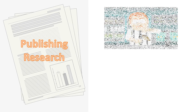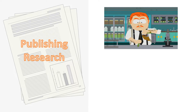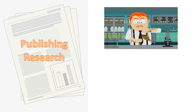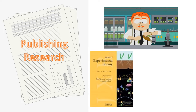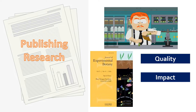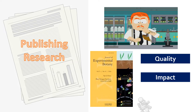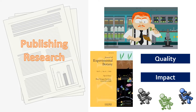Publishing and reading research papers, reviews, and thesis is an essential part of research. However, it is important to know the quality or the impact of the journal in which the paper is published. Usually, journals that have a rigorous peer review process and higher impact are considered to be more reliable.